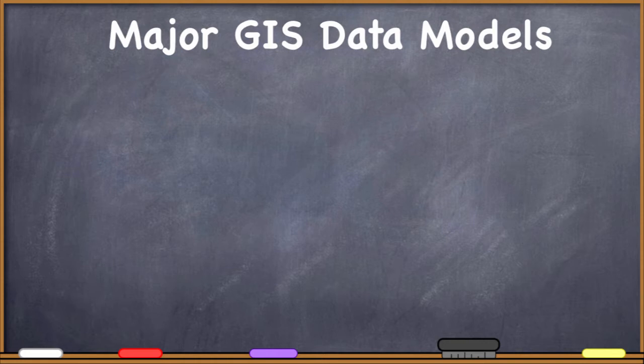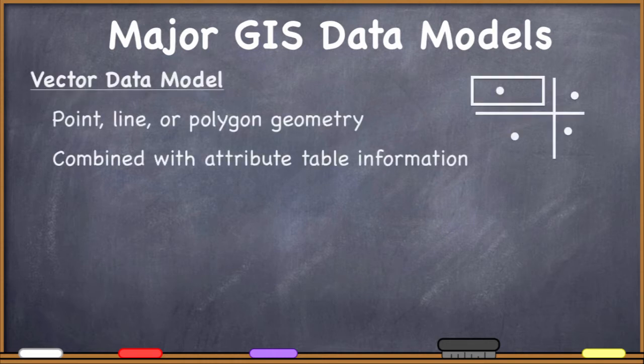If you remember a while back we said there are two major ways that we can store information or data about geographic features on the planet. We have two major data models for this and the first one was the vector data model. We've looked at that extensively at this point and worked with it a lot. If somebody says vector data model or vector GIS data, you should immediately think about points, lines, polygons or points, lines and areas.